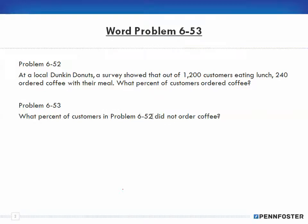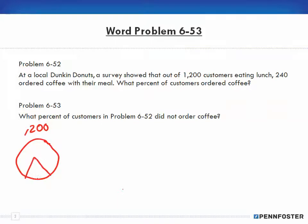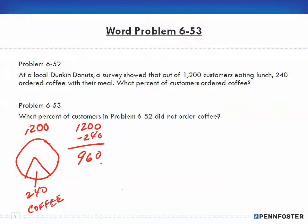Problem 6-53 asks: what percentage of customers in problem 6-52 did not order coffee? So we look at 6-52, which says at a local Dunkin Donuts, a survey showed that out of 1200 customers eating lunch, 240 ordered coffee with their meal. That means I have 1200 customers who ate lunch, 240 had coffee, and 1200 minus 240 gives us 960 who did not have coffee.